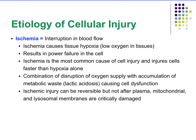What causes cell injury? The first etiologic factor is ischemia — interruption in blood flow — which causes tissues to become hypoxic, meaning low oxygen. Without oxygen, there will be a power failure because you won't make much energy. Ischemia is the most common cause of cell injury and injures cells much faster than hypoxia alone, because not only is oxygen absent, but all other nutrients carried by blood are also cut off from the cells.